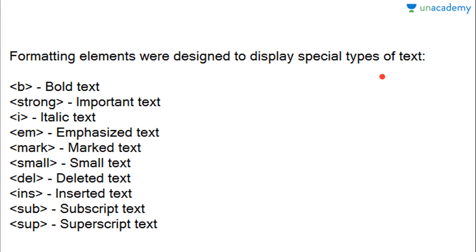These are very special types of text — let's see how they can be displayed. First is bold text, displayed using the B tag. Important text is defined by the strong tag. Italic text is defined by the I tag. Emphasized text, which appears in a similar italic style, is defined using the EM tag. Marked text uses the mark tag, small text uses the small tag, deleted text uses the del tag, and inserted text uses the INS tag.